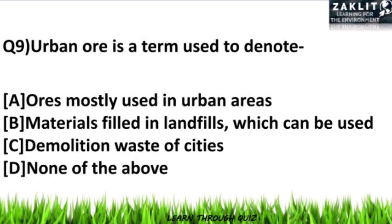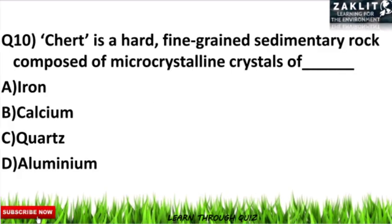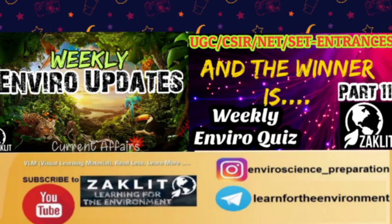The tenth question is: chert is a hard, fine-grained sedimentary rock composed of micro-crystalline crystals of what? The options are iron, calcium, quartz, or aluminium. That's the end of the quiz contest — hurry up and write all your answers in the comment section. The link to our Telegram and Instagram groups is in the description below. Stay tuned for the results, which will be revealed tomorrow.